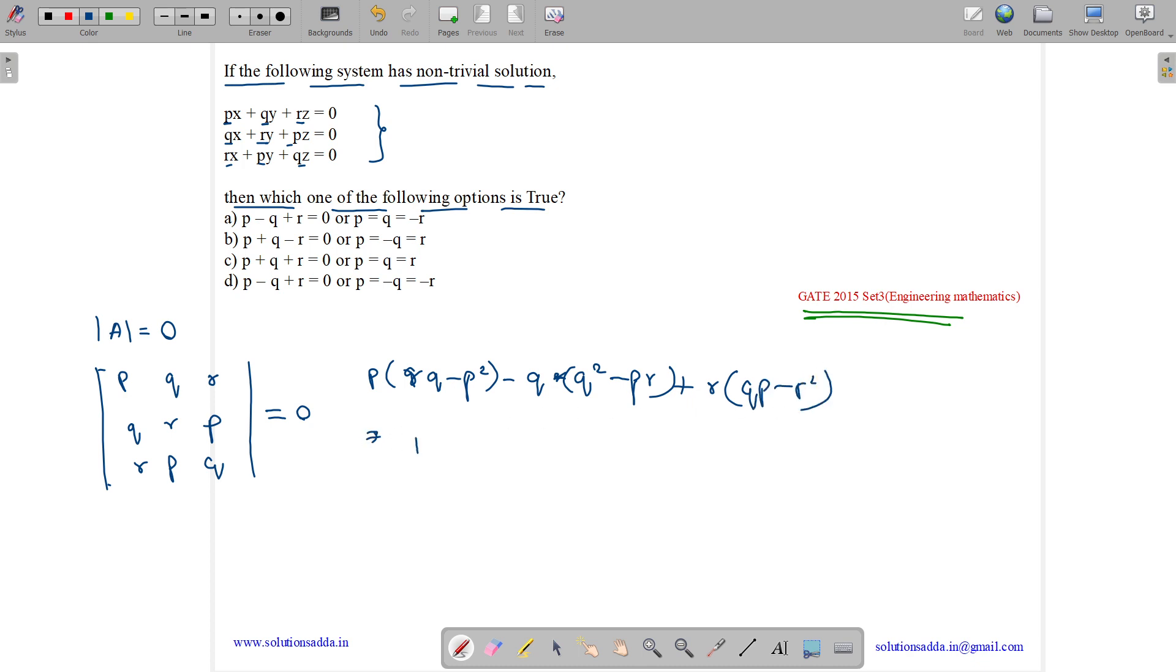Solving this, we get PRQ minus PQ. Opening the parenthesis: minus Q cube plus PRQ plus PRQ minus R cube. Taking PRQ all three one side: minus three PRQ minus P cube minus Q cube minus R cube.